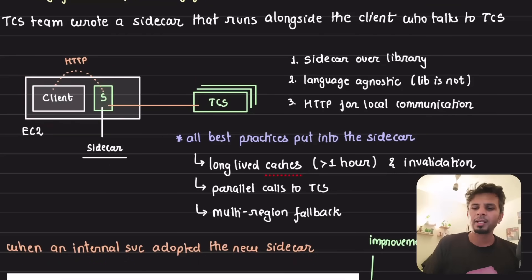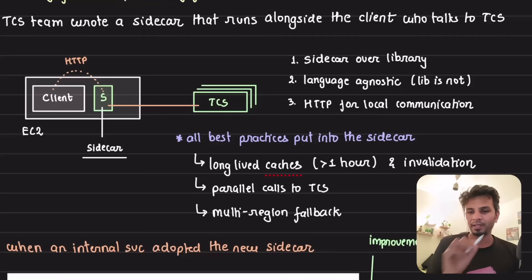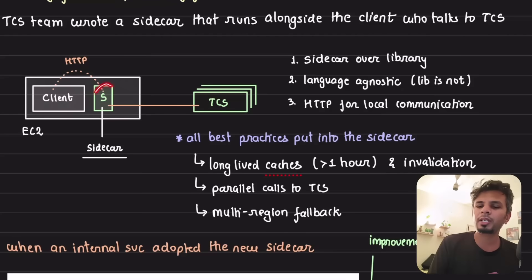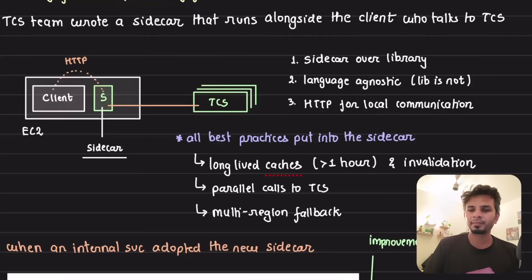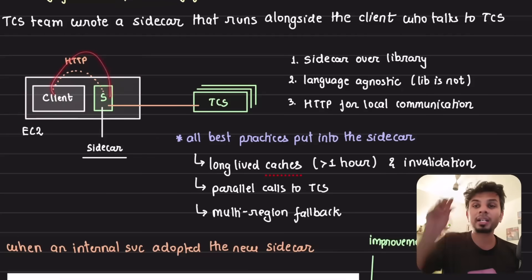Sidecar is a pretty simple concept. Imagine this is your EC2 instance with your application — let's say a Bitbucket or Jira microservice — running as a web server. Now imagine this service wants to talk to TCS. Either it makes an HTTP call directly to TCS, where best practices have to be followed — which this team did not follow. That's the problem. The solution is to introduce a sidecar: a separate process running alongside your application on the same EC2 instance.